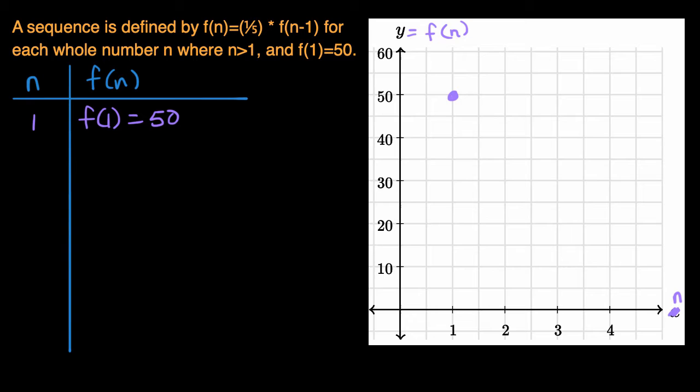All right, let's do the next one. I'll do that in red. When n is equal to two, f(2) is going to be equal to one-fifth times f(2-1), or one-fifth times f(1). So I could just write that as one-fifth times f(1), which is equal to one-fifth times 50, which is equal to 10. So when n is equal to two, this is equal to 10 right over here. f(2) is 10.